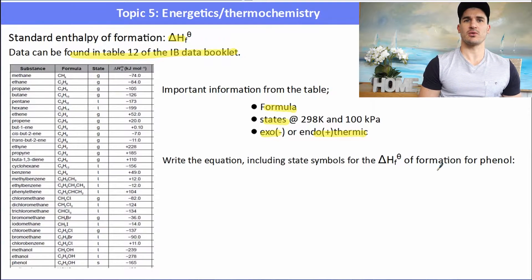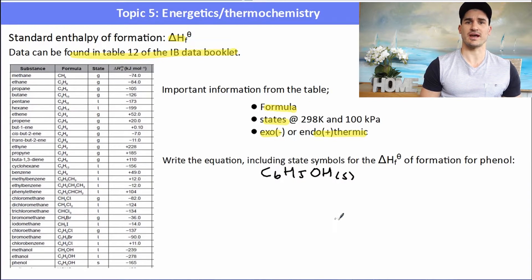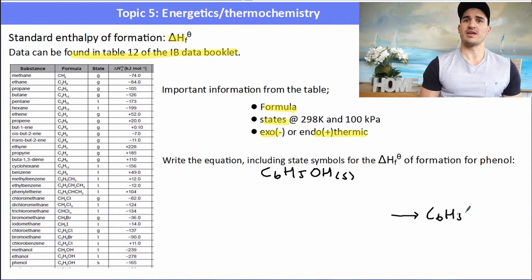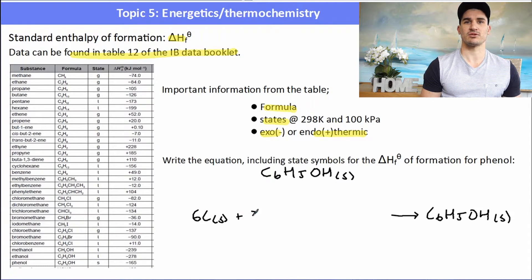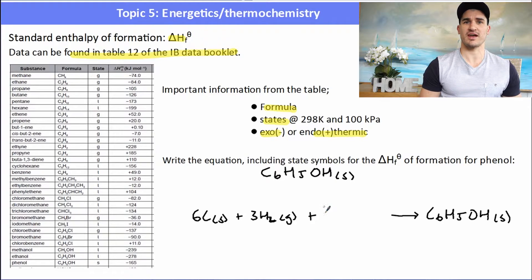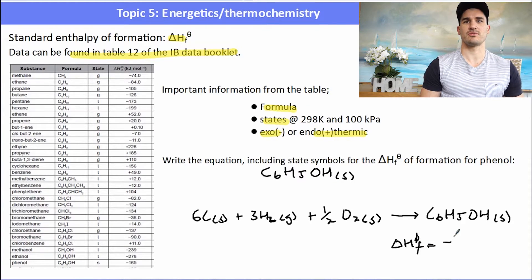So here's another example. Write an equation including state symbols for the delta H formation of phenol. So phenol is a chemical that contains a benzene ring and then a hydroxy functional group, C6H5OH, and it's a solid at room temperature. So we need to form one mole of phenol from its elements, so we have phenol as our product, C6H5OH. Now how many moles of carbon do I need? Well I need six moles of carbon, so I have six carbon solid. I need six moles of hydrogen, but hydrogen comes as a diatomic molecule, so I have three moles of H2 gas. And now I only need one mole of oxygen, so I have a half a mole of O2 gas. Again, using the table, we can see that the delta H formation is negative 165 kilojoules per mole, and that is an exothermic reaction.